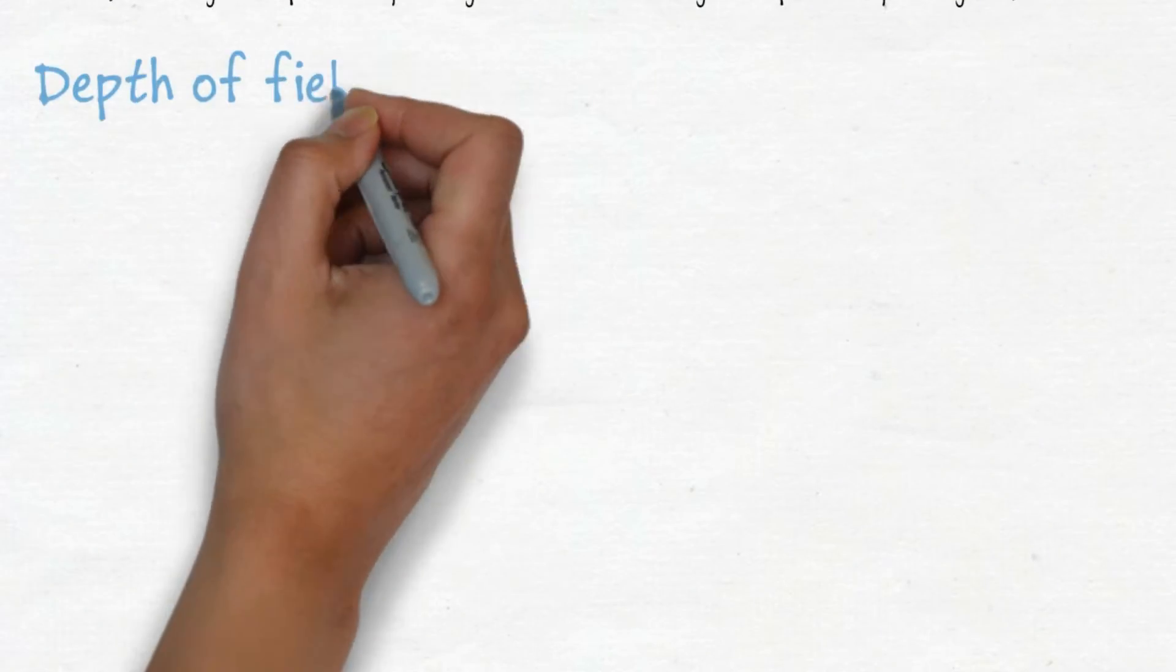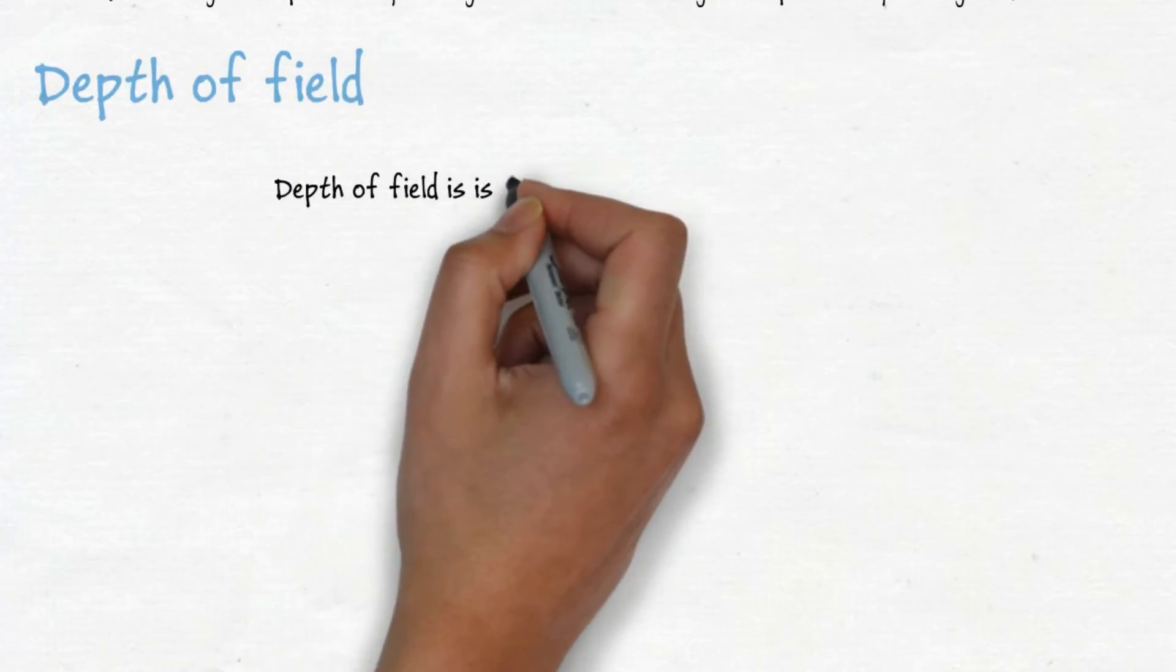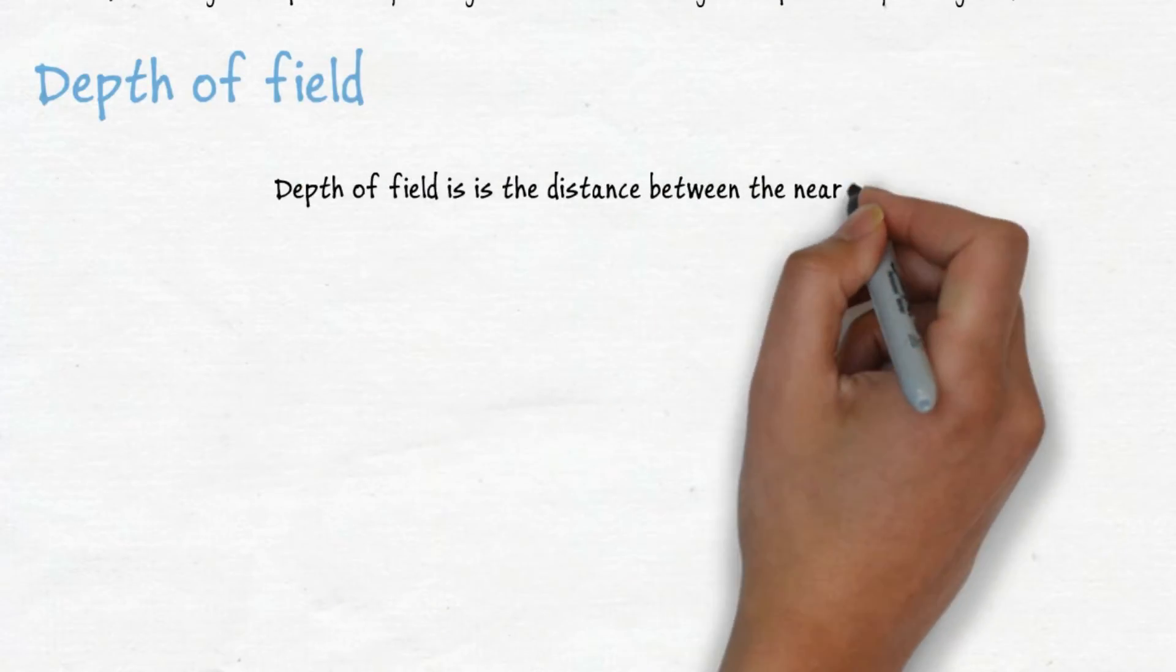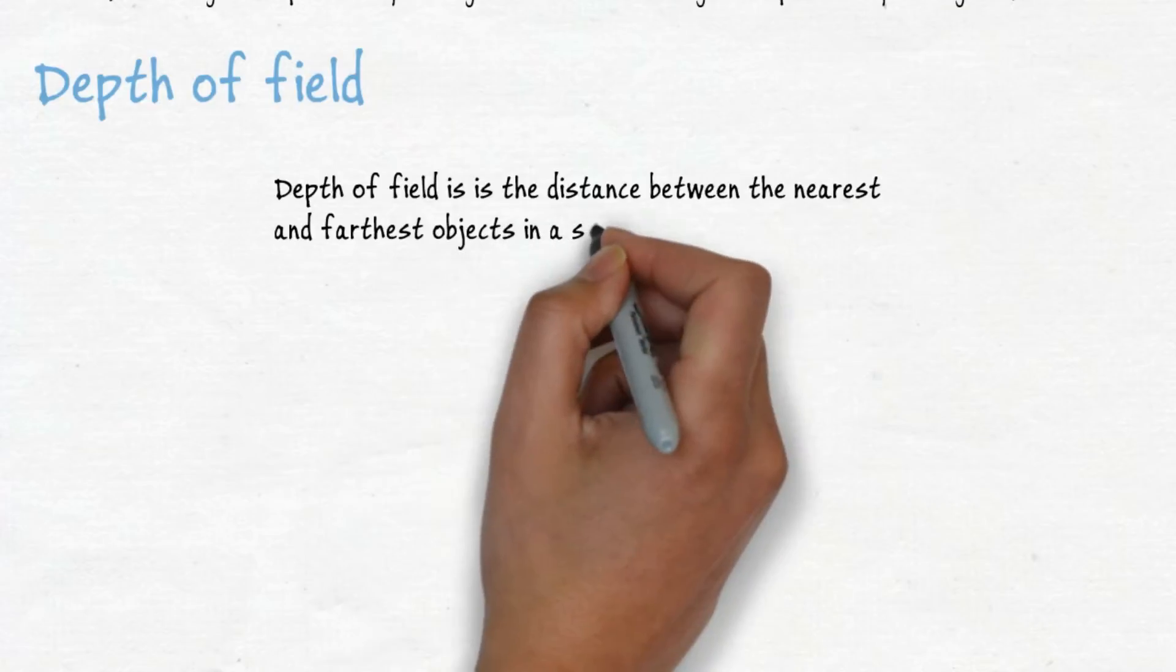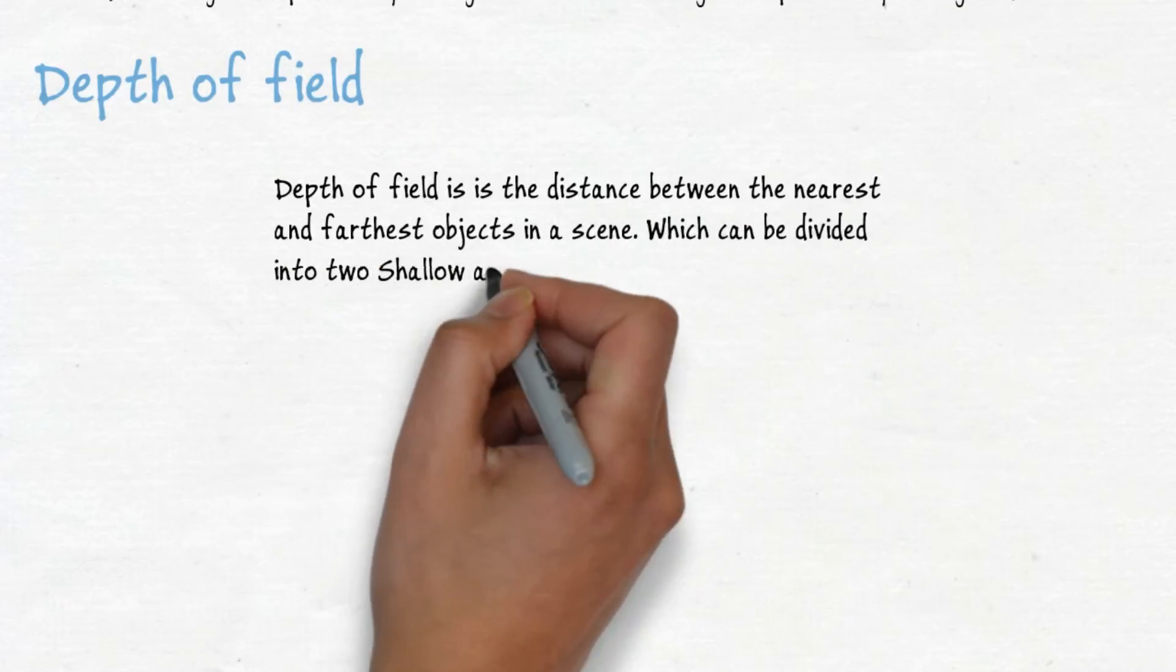Depth of field is the distance between the nearest and farthest objects in a scene, which can be divided into two: shallow and wide depth of field.